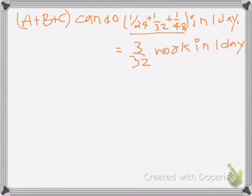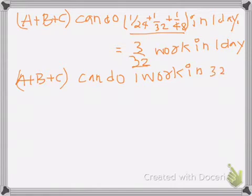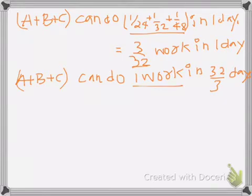So A plus B plus C can do the overall one work: 32 becomes the numerator and 3 becomes the denominator — that is 32 divided by 3 days to complete one total work.